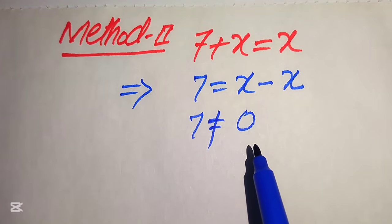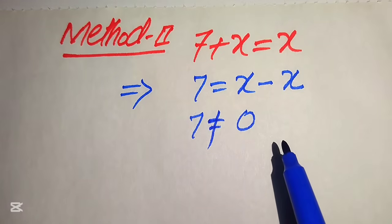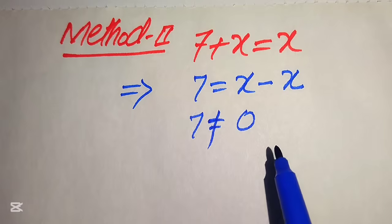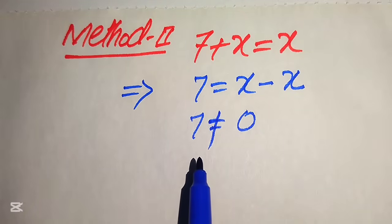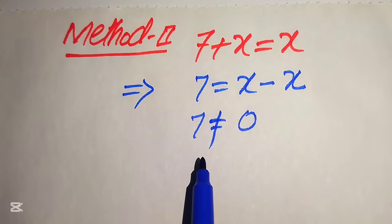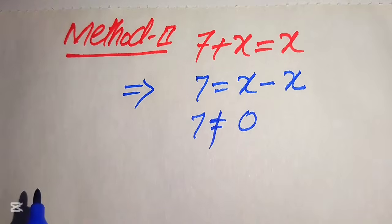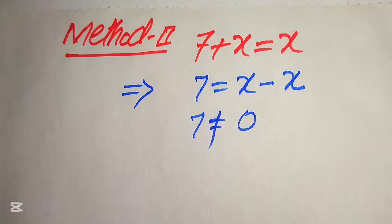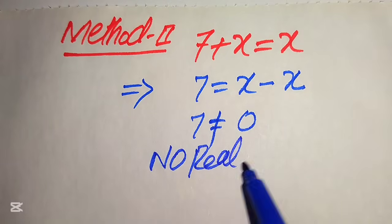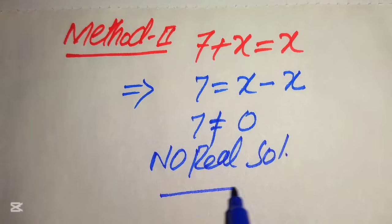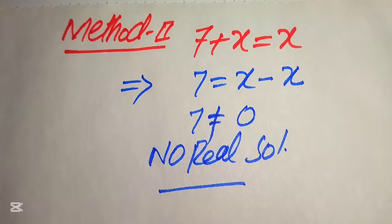In method one, we found a value of x, but that value did not satisfy the original equation. In method two, the trivial approach directly tells us this equation has no solution — you cannot find any value of x that satisfies it. Therefore, the equation has no real solution. Thank you for watching; please subscribe to my channel for more videos.